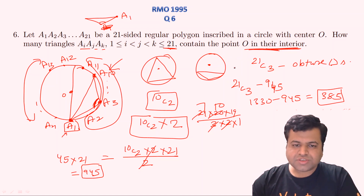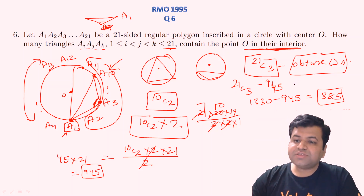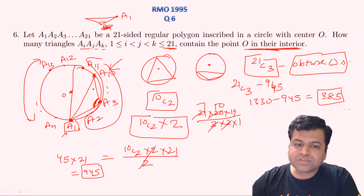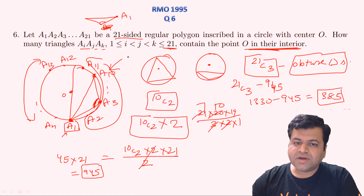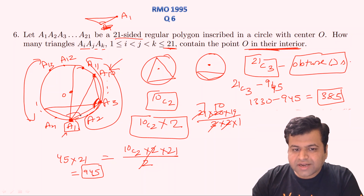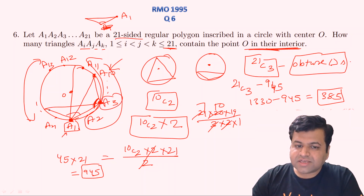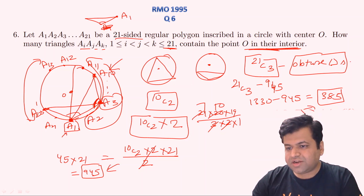To recap: we calculated the total number of triangles, subtracted the total number of obtuse-angled triangles, and the remaining are the acute-angled triangles. In this particular situation there are no right-angled triangles, because since this is an odd-sided polygon, joining any two of its vertices cannot form a diameter of the circle. Any doubt about triangles where A1 itself has the obtuse angle — those are accounted for when we count starting from other points like A3 or A20. All such triangles are included in the 945 obtuse-angled triangles. The final answer is 385.